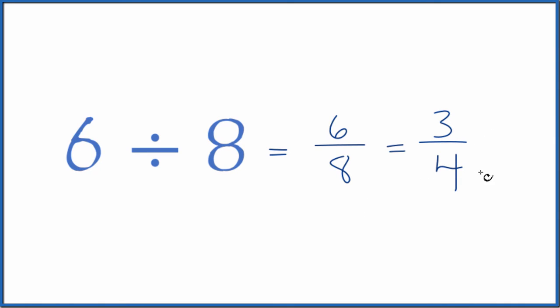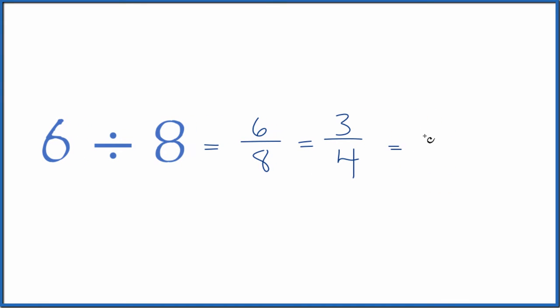And if you divide 3 by 4 or 6 by 8 on your calculator, you get 0.75. So the decimal is 0.75. That's what we get when we divide 6 by 8.